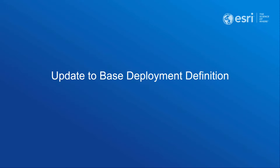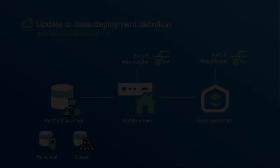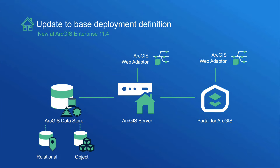Moving on, at 11.4, there is an update to the definition of a base deployment. In ArcGIS Enterprise 11.3 and earlier on Windows and Linux, a base deployment has been defined as Portal for ArcGIS, ArcGIS Server, ArcGIS WebAdapter, and ArcGIS DataStore configured as a relational and tile cache data store. In ArcGIS Enterprise 11.4, the tile cache data store is deprecated and the functionality is being replaced by the object store. Existing hosted scene layers will continue to work, but new hosted scene layers will require ArcGIS Enterprise to have ArcGIS DataStore configured as object store.